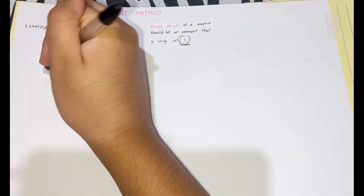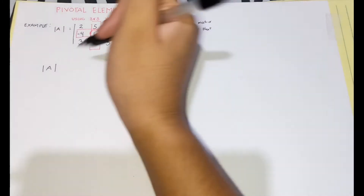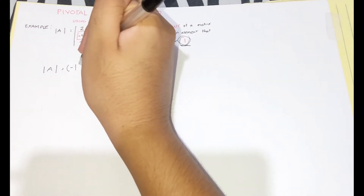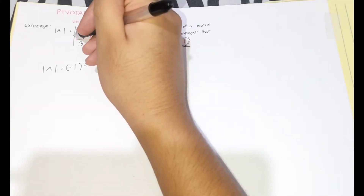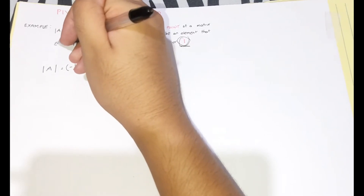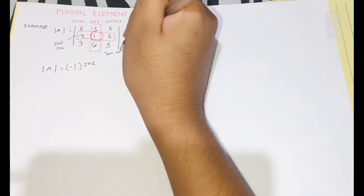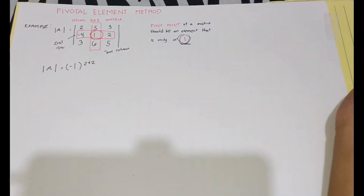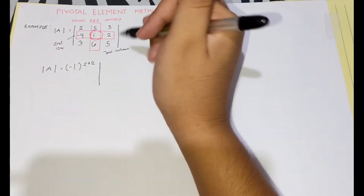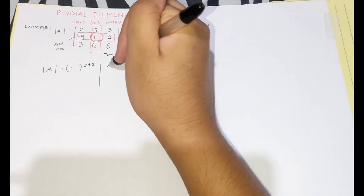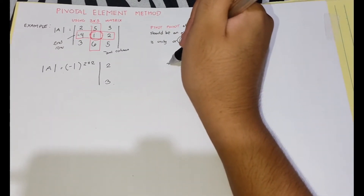Next is to find the determinant of matrix A using the pivotal element method. First, find the common solution which is negative 1, and its location, which is the second row and second column. That is why negative 1 is raised to 2 plus 2, indicating the position of the pivot point. After finding the common solution, multiply and write the remaining elements: 2, 3, 3, and 5.